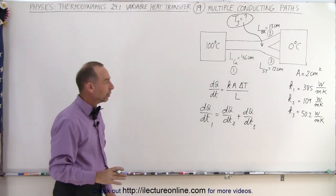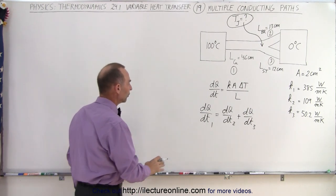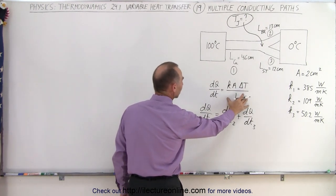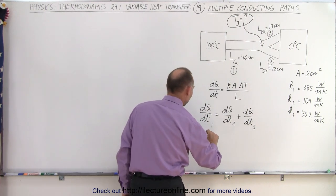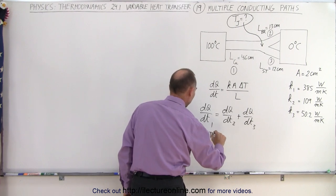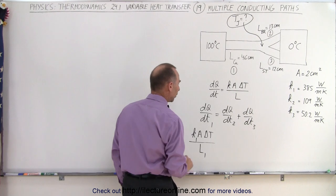We can plug in what they equal. In the first case, dQ/dt can be written as K1 A times delta T divided by the length of that path, which we'll call length 1.